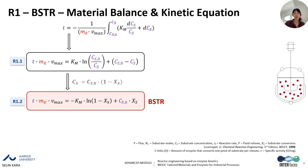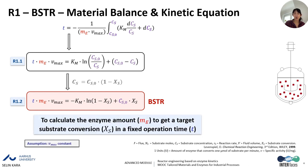Both of these equations help us to calculate the enzyme amount needed to achieve a target substrate conversion — using R1.2 — or to find the remaining substrate concentration at time x — using R1.1 — for a fixed operation time. These equations allow us to assess and compare across different reactor types what enzyme concentration is needed to reach the same substrate conversion.